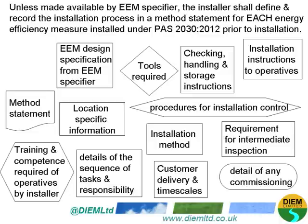What is needed are procedures for installation control and installation method. This will include the tools required, checking, handling and storage instructions of equipment and materials, the installation instructions to operatives, the training competence required of operatives, details of the sequence of tasks and responsibilities for each task, customer delivery and timescales, and the requirement for intermediate inspections and details of any commissioning. All these need to be in the method statements for PAS 2030.